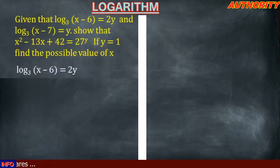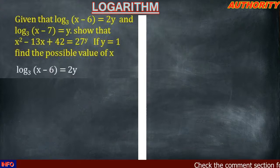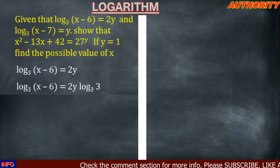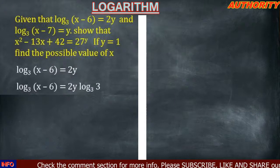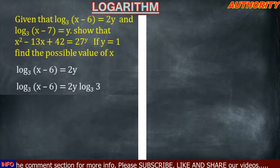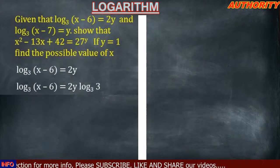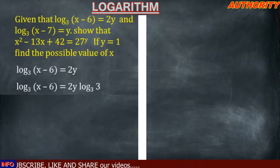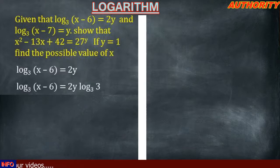Solution. For the first equation, we have log(x−6) base 3 equals 2y. The right-hand side 2y is the same as saying 2y times log(3) base 3, because log(3) base 3 equals 1. So 1 times 2y is still 2y.